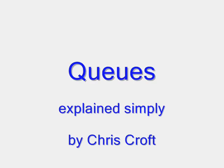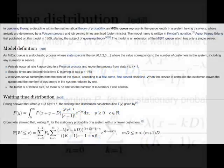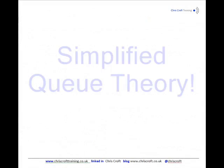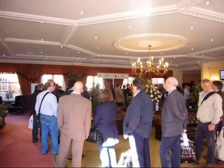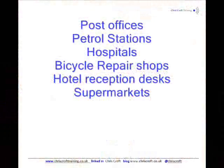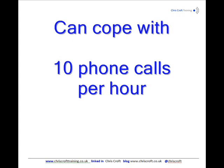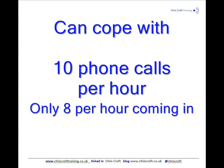Queue theory is a very complicated mathematical area, but the good news is there's a simplified queue theory that you can use, which explains all sorts of everyday life situations. So let's suppose, for example, that you've got someone who can cope with 10 phone calls an hour, and they've only got 8 phone calls incoming per hour on average.